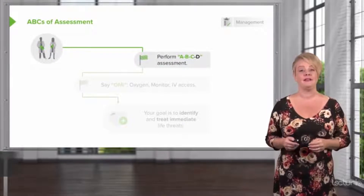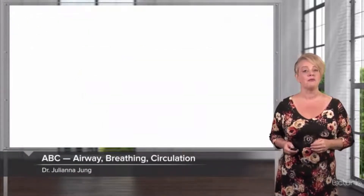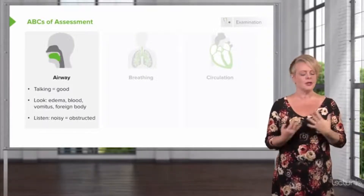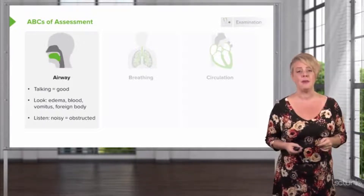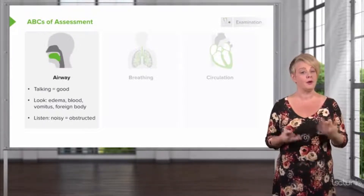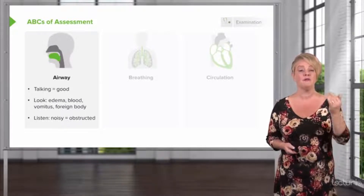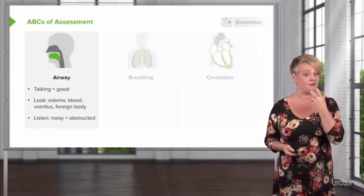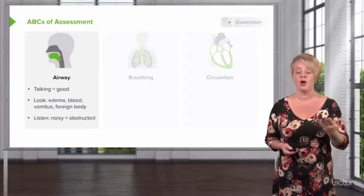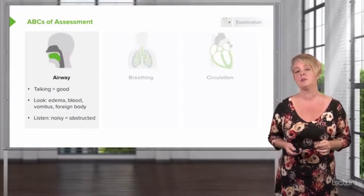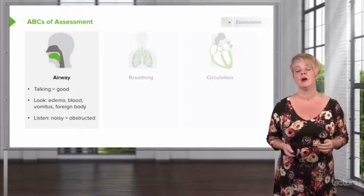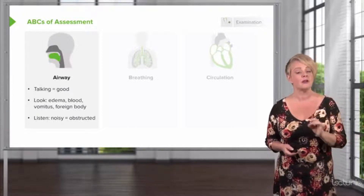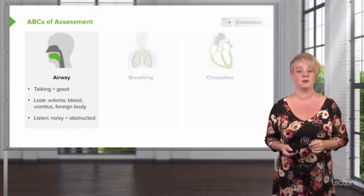A, B, C stands for airway, breathing, and circulation. When we think about the airway, anybody who's talking — that's a good sign, they have a patent airway. But even a patient who's able to speak and phonate normally could potentially have future airway obstruction, so we want to be prepared. Look for signs of edema in the face or pharynx, look for blood, vomit, or other foreign material in the airway, and listen to their breathing with your naked ear. Anytime a patient is breathing in a noisy or easily audible way, that's obstructed breathing — and the louder it is, the more concerned you should be.